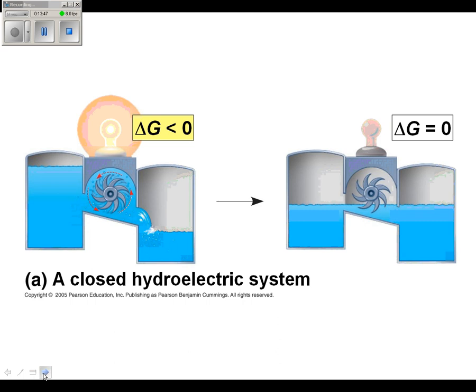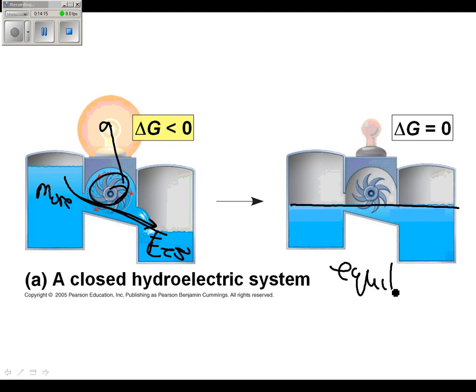A couple examples. If we close up this hydroelectric system and we have water in here and water in here and water is flowing downhill, spinning this, this has more free energy than this. Delta G is, so we're getting electrical light. Here they're the same. We would call it equilibrium in a cell, no movement, no light.